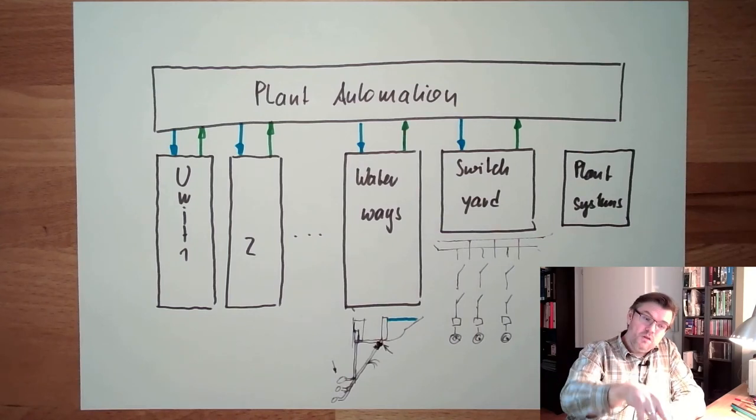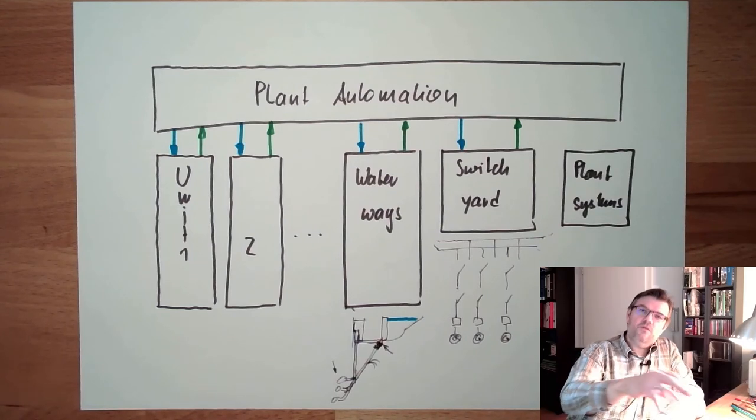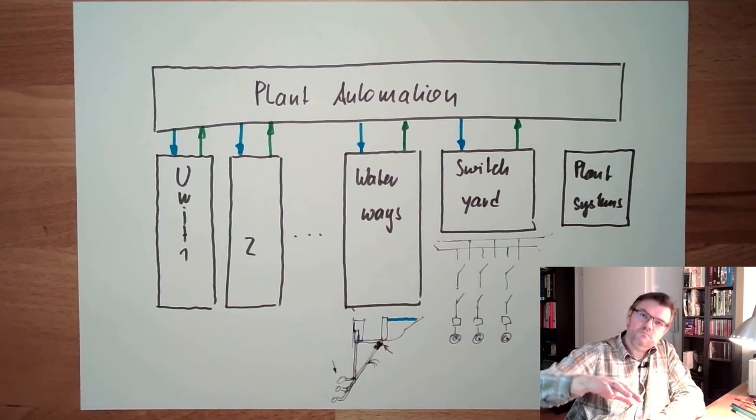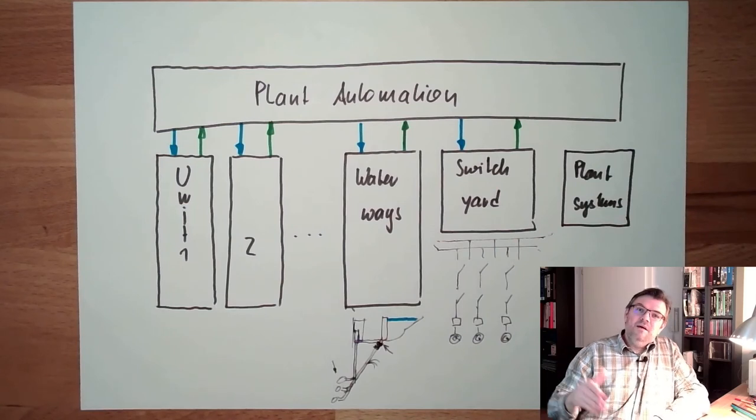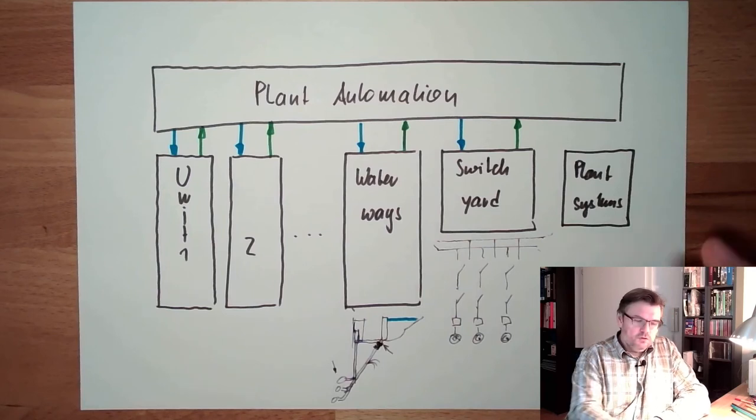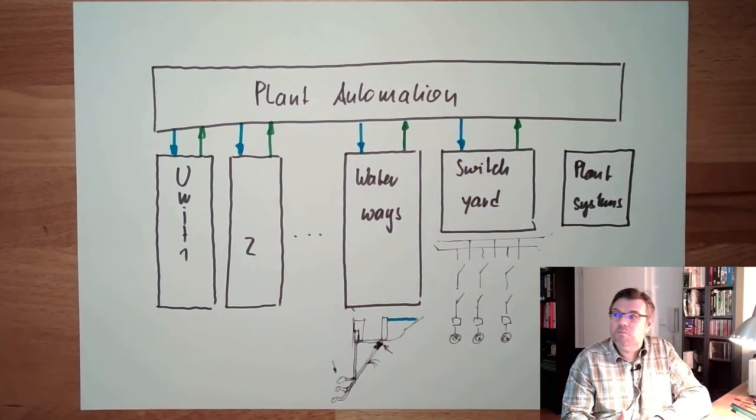Once one unit is running, the one unit will supply the power plant, and then we'll start the second unit, the third unit, and then we go to the outside world, and this is then rebuilding the network. So, also, these emergency power supplies, it's only once for the power plant. I have to power up the whole power plant.